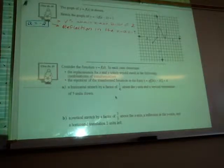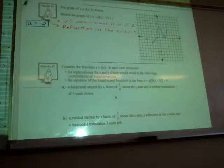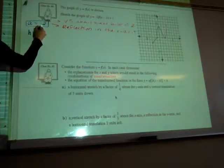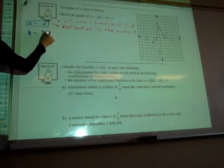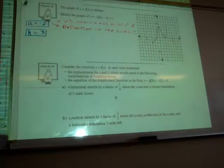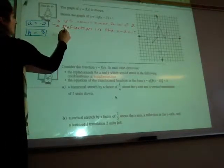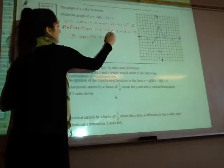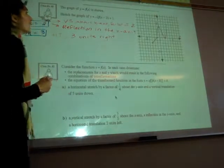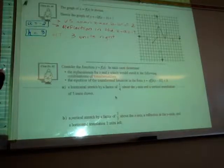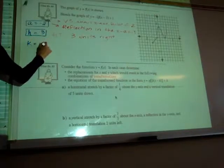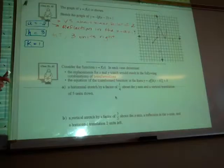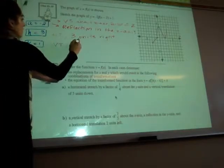Okay, what about h? 3. Positive 3. Good. So what happens there? We have a horizontal translation, and that's going to be 3 units right. And lastly, our k value is positive 1. So we have a vertical translation, 1 unit up.